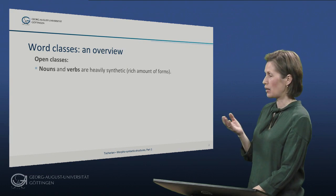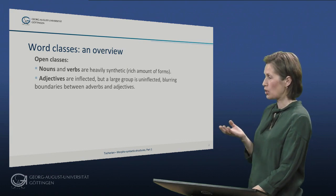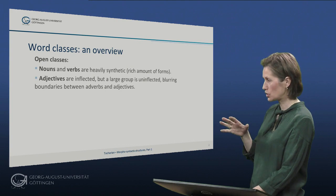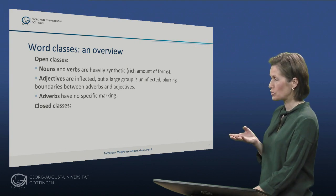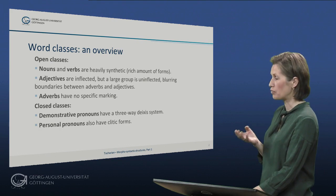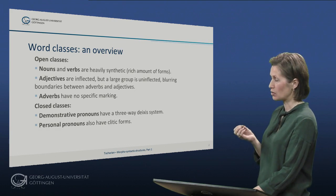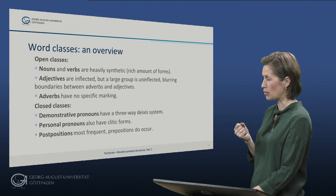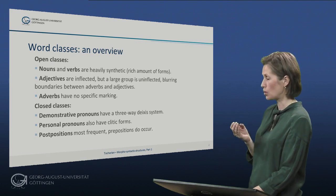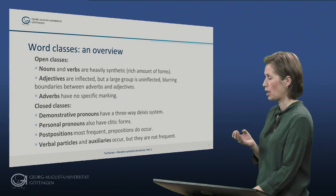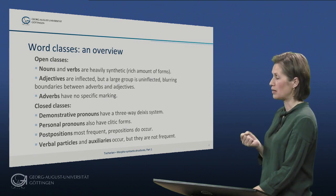We have nouns and verbs, and they are heavily synthetic, which means that there is a rich amount of forms. We have adjectives that are inflected, but there is also a large group that is uninflected, which blurs the boundaries between adverbs and adjectives. The adverbs have no specific marking. Moving over to the closed classes, we have demonstrative pronouns and personal pronouns. Personal pronouns also have a set of clitic forms that are important in grammar or alignment. Postpositions are most frequent, but prepositions do occur, and we have verbal particles and auxiliaries, though they are not very frequent because Tocharian is a heavily synthetic language.